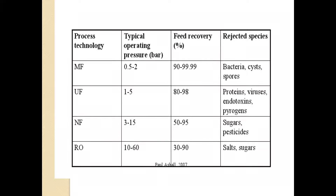Regarding rejected species: microfiltration rejects all bacteria, cysts, and spores. Ultrafiltration rejects proteins, endotoxins, and pyrogens. Nanofiltration reduces sugar molecules and pesticides. Reverse osmosis rejects salts and some sugars.